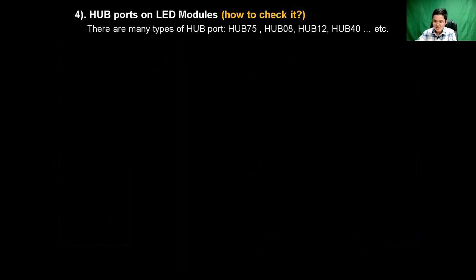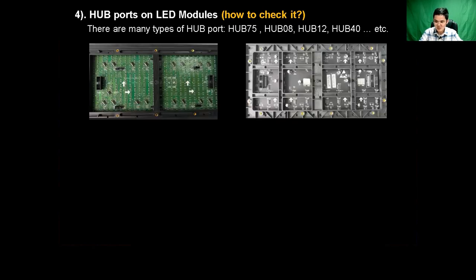Every LED module has connection ports — we call them hub ports. The hub ports are used to connect with another module and also to connect with controllers. There are many types of hub ports, such as HUB75, HUB8, HUB12, and HUB40, and so on.